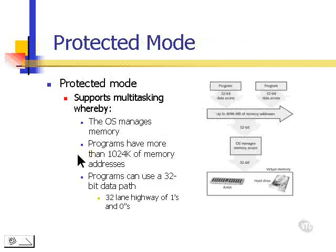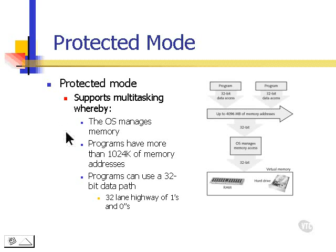Today we use protected mode. Protected mode supports multitasking because the operating system manages memory. Programs can have much more than 1 meg of memory addresses, and they typically use a 32-bit data path, which is like a 32-lane highway — and you can see what the advantage of that would be. So those are some common software terms.